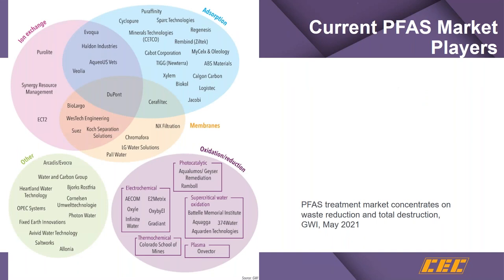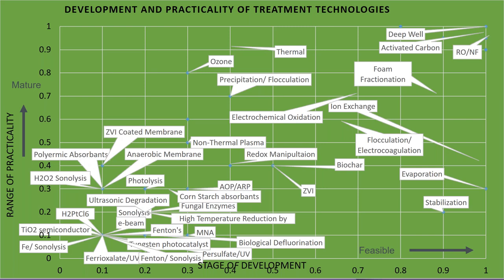There's a tremendous number of technologies and a lot of players. We've tried to make some sense out of these — absorption technologies, some players in ion exchange, oxidation reduction, and other technologies including plasma and even earthworms, representing a wide range. We put together a chart looking at the stages of development with a range of practicality. In the upper right you see reverse osmosis, activated carbon, and ion exchange as very well accepted technologies. Laboratory or innovative technologies appear toward the lower left.